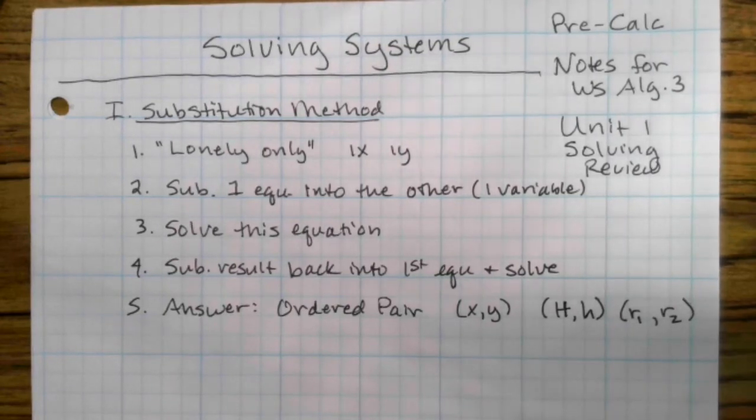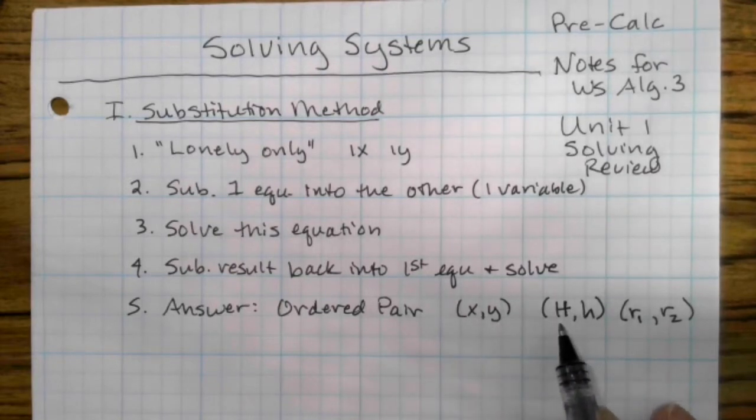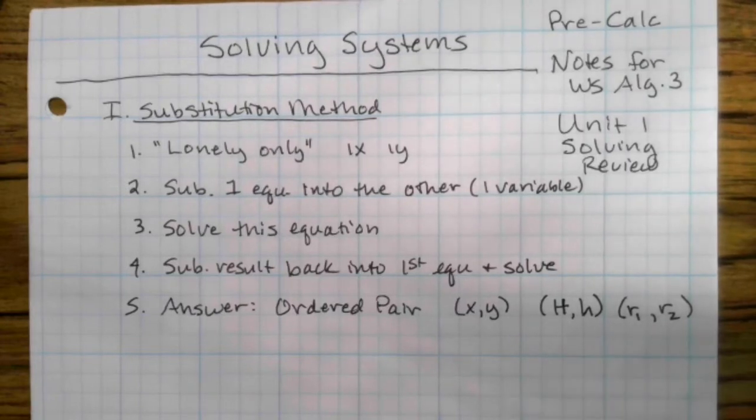So ordered pair is generally alphabetical from capital to not capital, and then just in order of subscript. Okay, so we're going to do an example of substitution method.